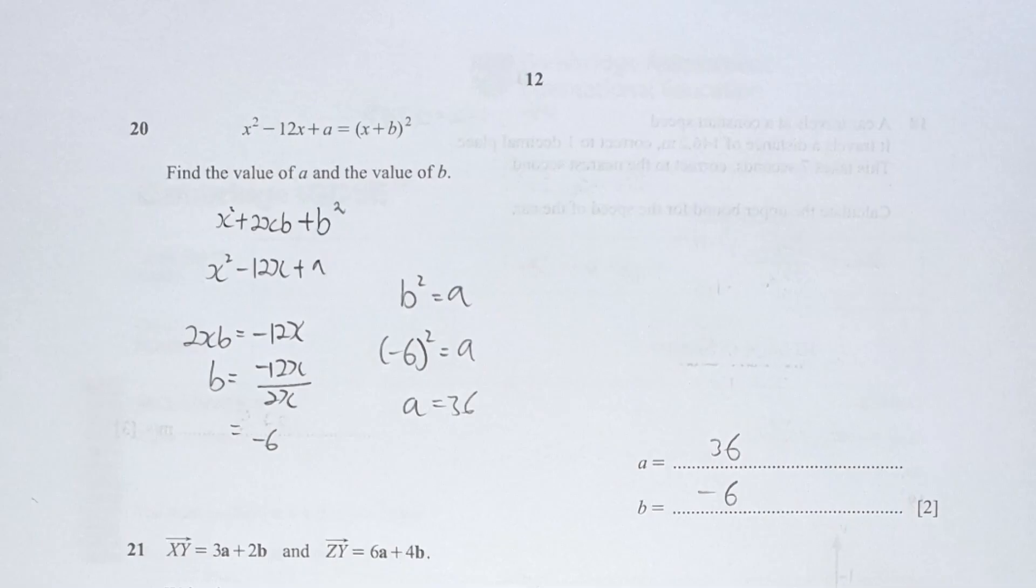For question 20, you can expand (x + b) squared to get x squared plus 2xb plus b squared, then compare them. 2xb equals negative 12x. By calculation, b equals negative 6. And b squared equals a, so negative 6 squared equals 36. Your a is 36 and b is negative 6.